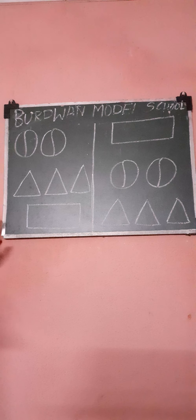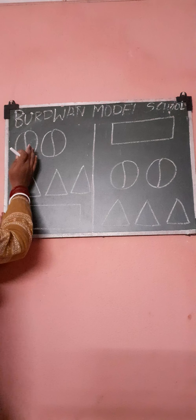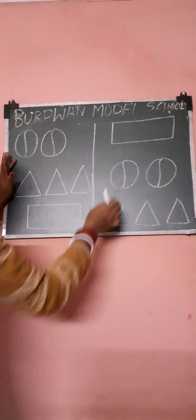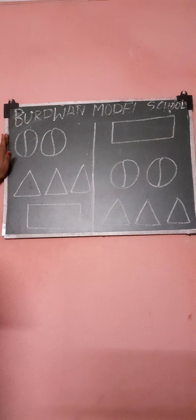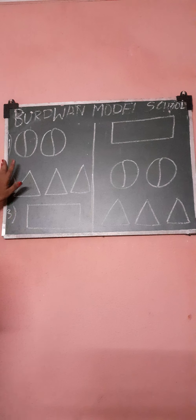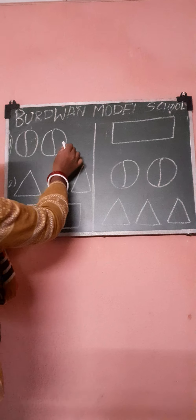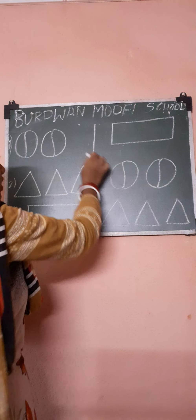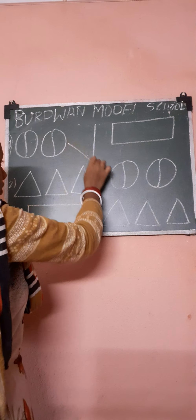So my dear student, can you see some drawings on the board? We will match this column with this column. We will count the first number. How many balls are here? Let's count: 1, 2. We will match with this — yes, it is equal.